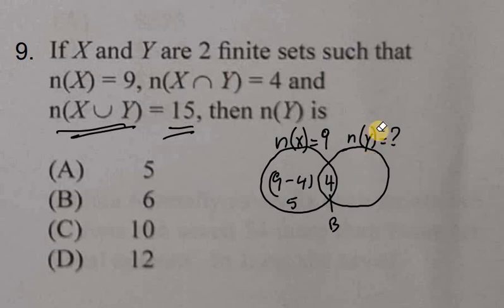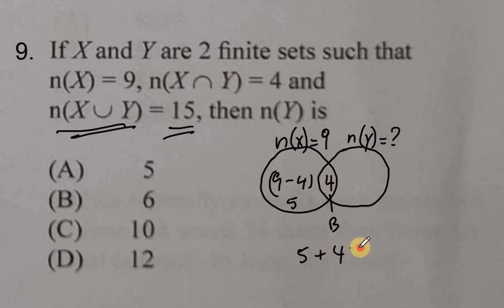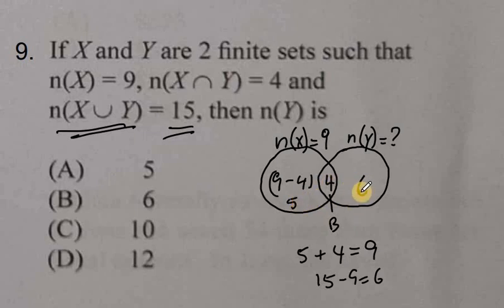Now if we want to find out what the amount in section C should be, we do the same thing. We don't know the number of elements in set Y, but we know that when we add section A to section B to section C we get 15. Section A has 5, section B has 4 — that gives us 9. How much more do we need to get 15? Well, 15 minus 9 equals 6, so section C has 6. Adding 4 plus 6 gives us 10, the number of elements in set Y.